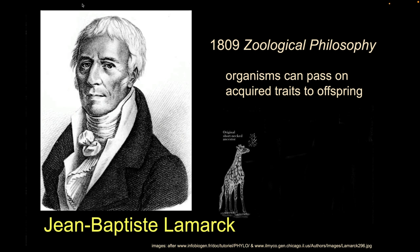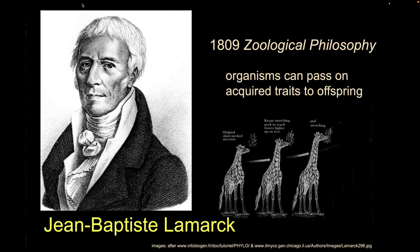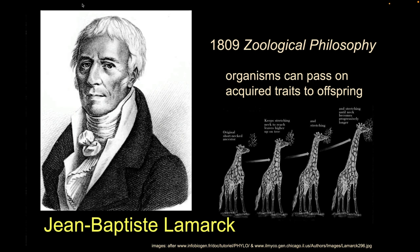The classic Lamarckian example: a giraffe stretches its neck to reach a far-away leaf, and after many years of doing that the neck gets a little longer. Then when the giraffe has a baby, the babies also have long necks. That's obviously not right — Arnold Schwarzenegger's kids aren't muscle-bound. The point is that acquired characteristics aren't passed on.